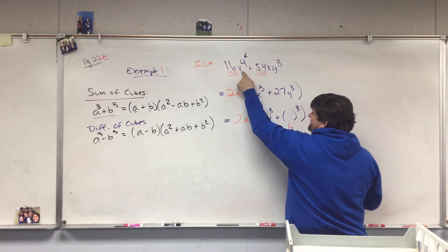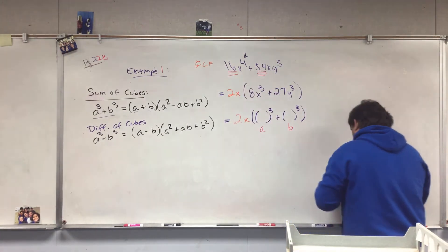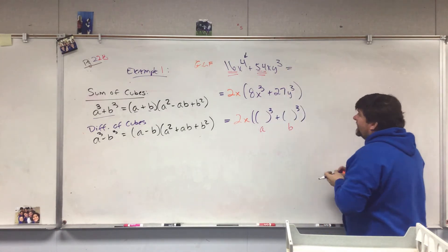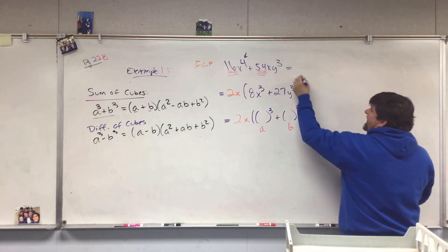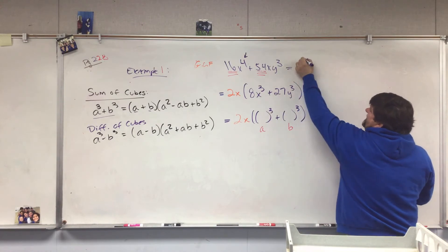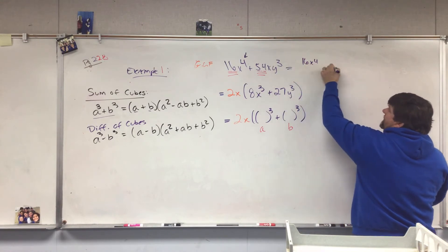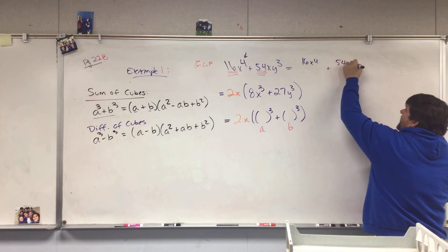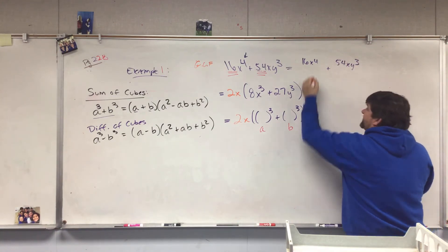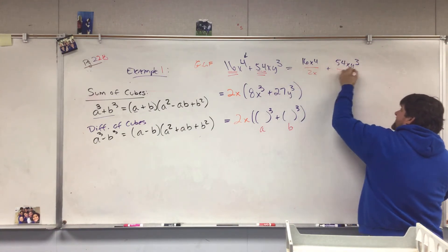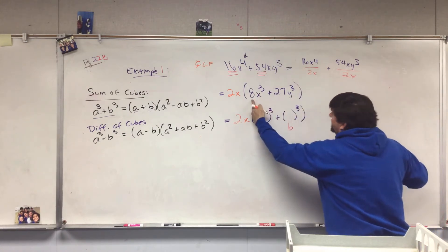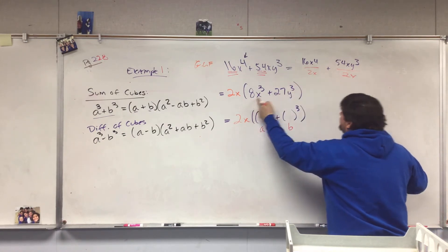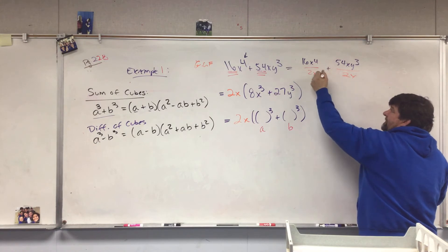So going back to our prior piece, we have the fact we can take X⁴ + 54XY³ and we can divide each one by 2X. 16 divided by 2 is 8, X⁴ divided by X is X³ (4 - 1 is 3).